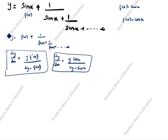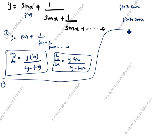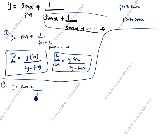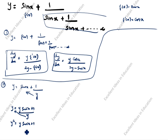Now we will use the differentiation method. y = sin x + 1/y, so cross-multiplying: y² = y·sin x + 1. Differentiating both sides with respect to x gives 2y·dy/dx on the left side. The right side, y·sin x, is a product.